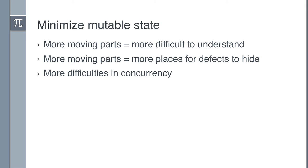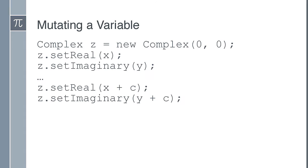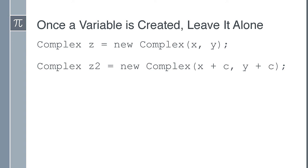The third tip is to minimize mutable state. The more moving parts you modify, the more places there are for defects to hide — and if you're running things in parallel you have even more difficulty. Consider a complex number object with a real and imaginary part: instead of modifying Z directly to add some constant C, create a new object Z2. Once a variable is created, it's done — make another one instead of reusing it.